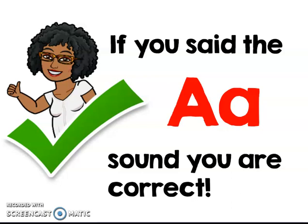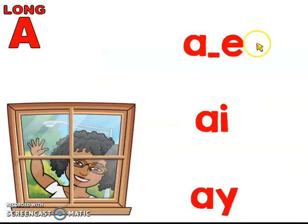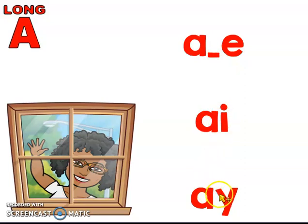Long A says its own name, A. It is spelled A consonant silent E, A-I which is a vowel digraph or vowel pair, and A-Y which is another vowel digraph or vowel pair. Boys and girls, A consonant E, A-I, and A-Y all say the same sound — the long A sound.